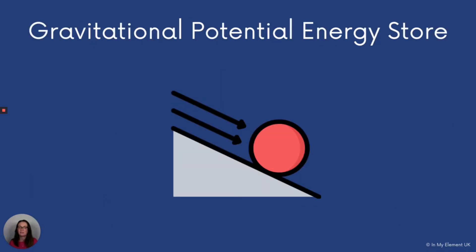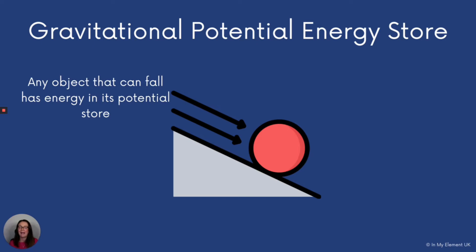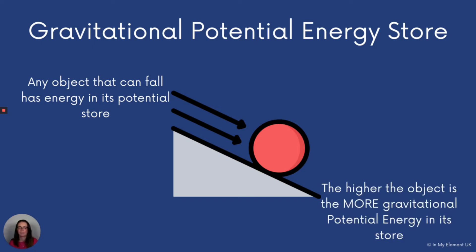First up, gravitational potential energy stores. Gravitational potential energy can be found in an object that's going to fall within the gravitational field. Any object that can fall has energy in its potential energy store. The higher the object, the more gravitational potential energy in its store.